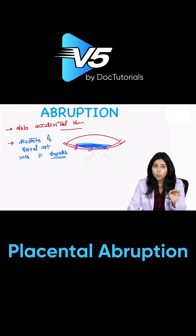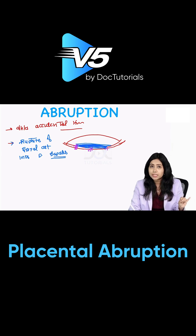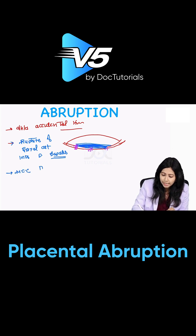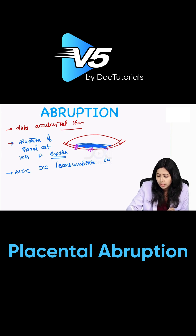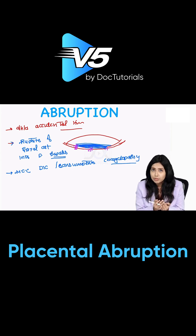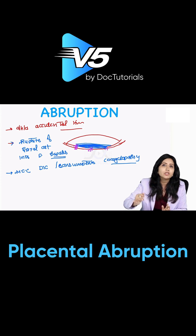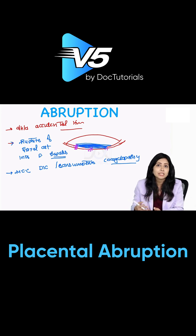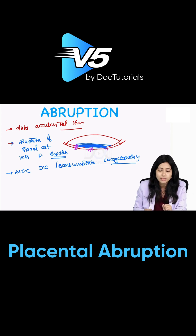This is the most common cause of antepartum hemorrhage. Apart from that, abruption is the most common cause of DIC — consumptive coagulopathy — as well. In abruption, there is more chance of complications happening early, such as early fetal distress and early development of DIC. Understand that the complications happen early in abruption placenta.